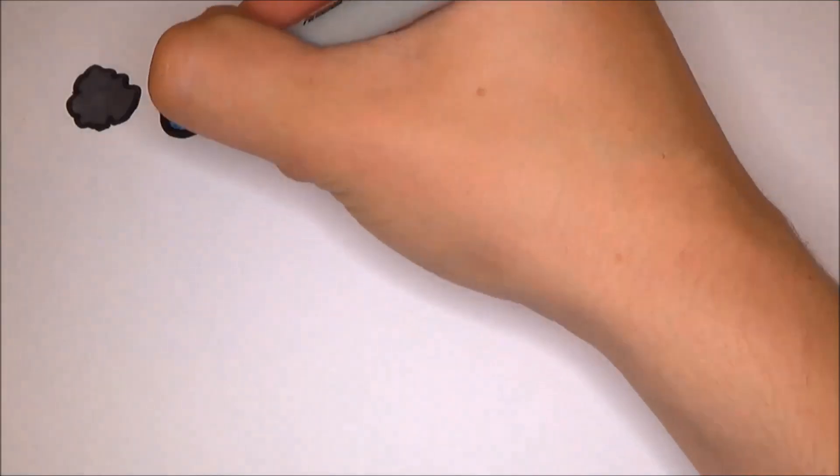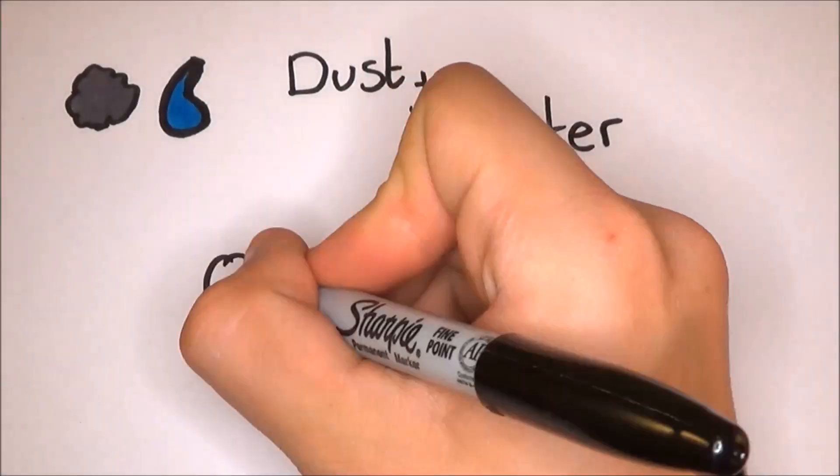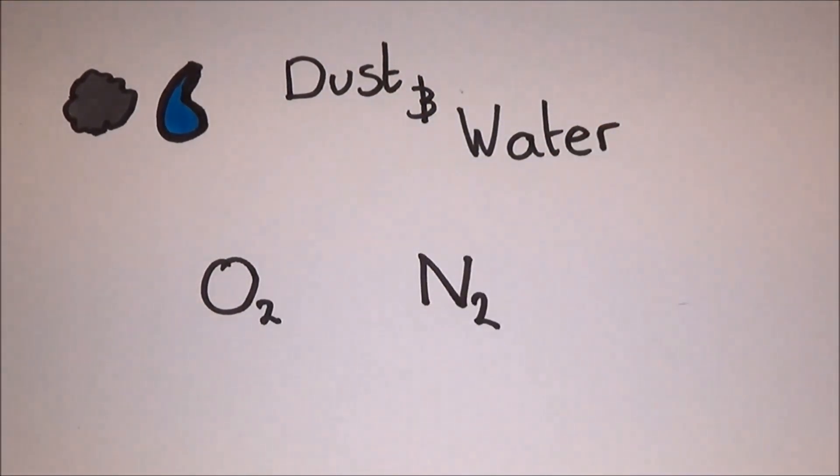The original thought was this was due to dust or water in the air that caused the colour. If this was true, different humidities would cause different colour skies. Later scientists had suggested that it was due to the molecules of oxygen and nitrogen.